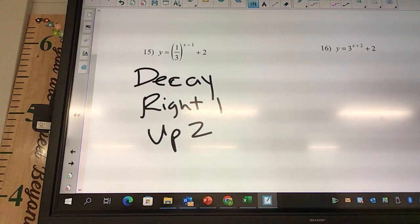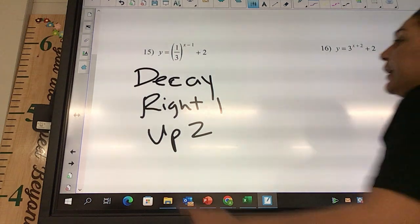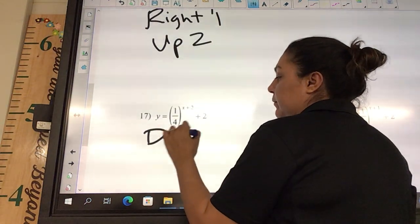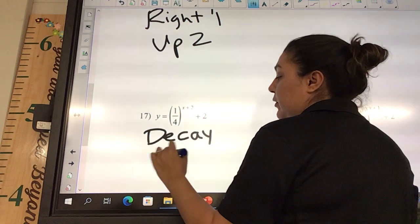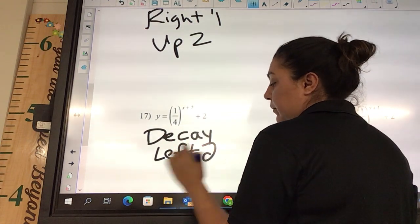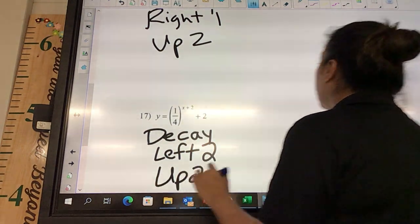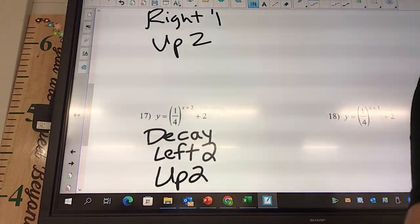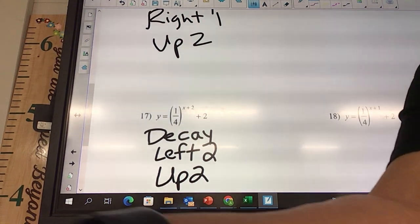And then Jeb, problem 17, is that growth or decay? Decay. Then what? Left 2, up 2. Good job, Deb. Okay, you guys got 9 problems to do. Go through, get them done, and then turn your paper in there. Make sure your name is on your paper. It's in the book.